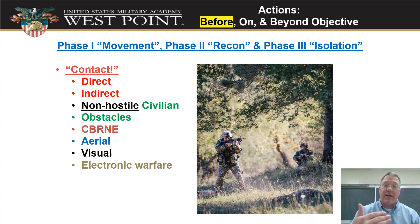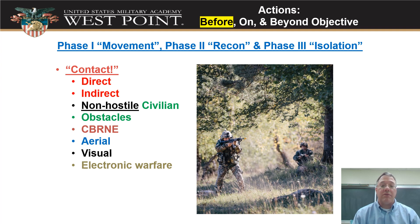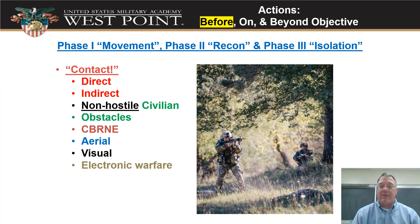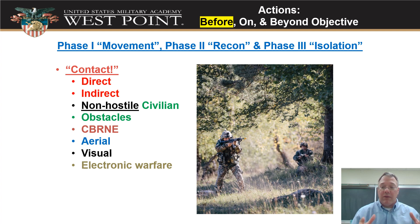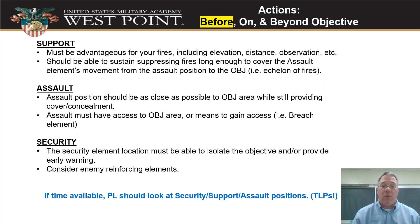How are you going to deal with obstacles? We can have contact with enemy obstacles. CBRN is always something to think about, especially as we go into high-intensity conflict. What about aerial contacts — enemy UAVs or helicopters flying overhead that might spot you? We can have visual contact with the enemy, which we probably want during reconnaissance so we can scout their defenses. Electronic warfare contacts are also something to consider. All of these need to be thought through during these phases, not just the primary plan of moving to the ORP, assault position, leader's recon, and support by fire.